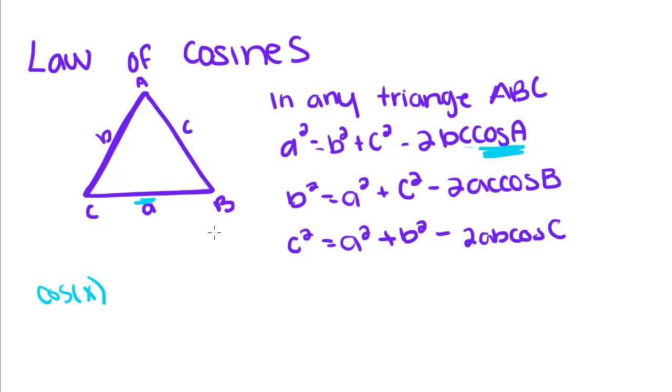So basically, the length of a side squared is equal to the sum of the other two sides squared minus 2 times side 1 times side 2 times cosine of the angle across from that side. I know it's kind of confusing, but it's actually pretty easy. So we're going to do some examples now.